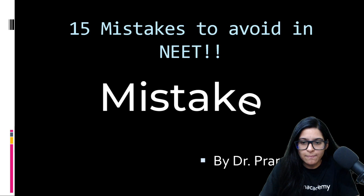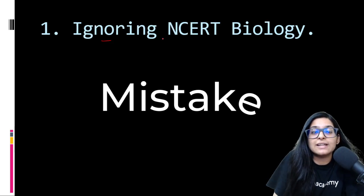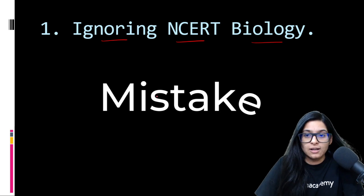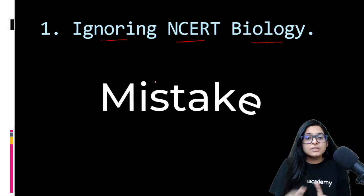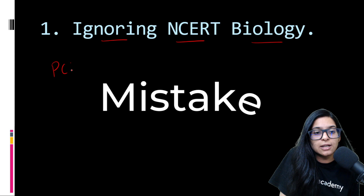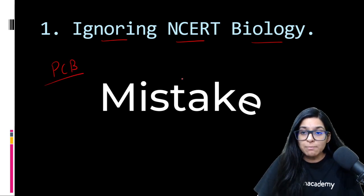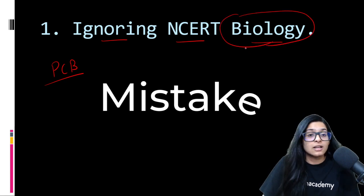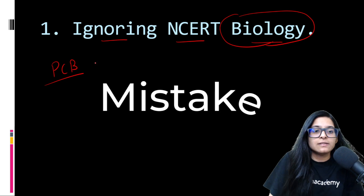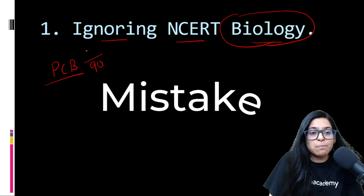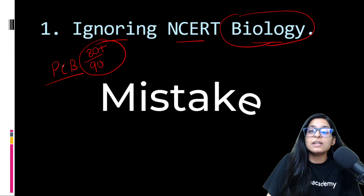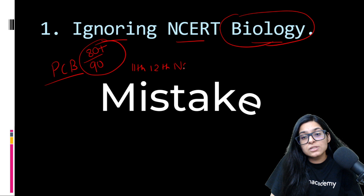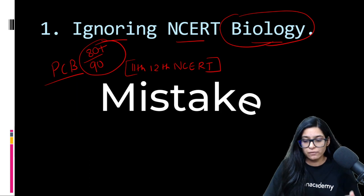The first mistake that you have to avoid is ignoring NCERT Biology. NCERT is the most important in all three subjects - physics, chemistry, biology - but biology is the most important. You cannot ignore this. 80 to 90 plus questions are asked from the NCERT itself, 11th and 12th, the textbook is NCERT. So at any cost, you don't have to leave it. Line to line, page to page, diagram to diagram, everything should be covered from NCERT biology.